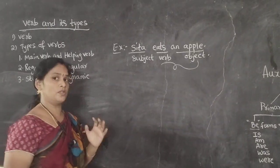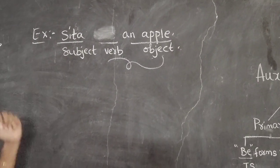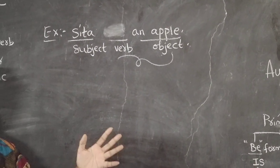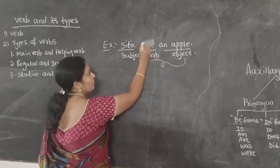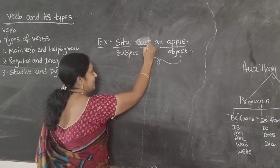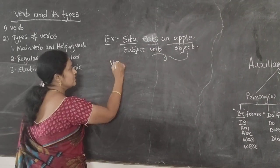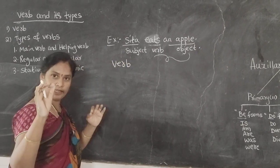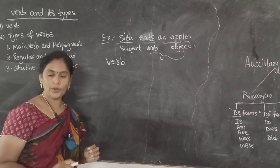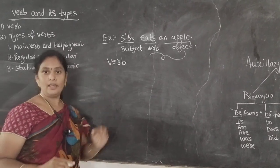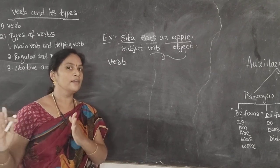Children, suppose if you remove 'eats', so the sentence is 'Sita and apple.' Is it a complete sentence? No. So we have to put 'eats' — a verb. That means the verb is a very important part in a sentence. The main word in a predicate. So from this we can say a meaningful sentence cannot be completed without a verb.